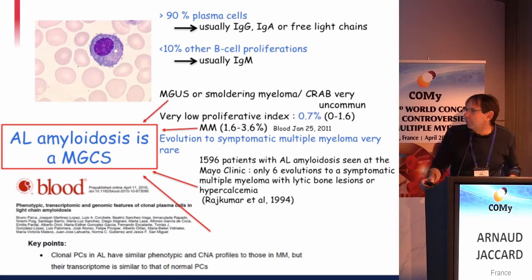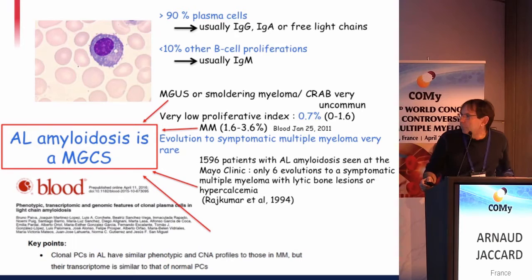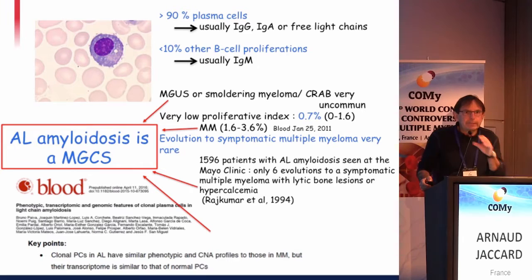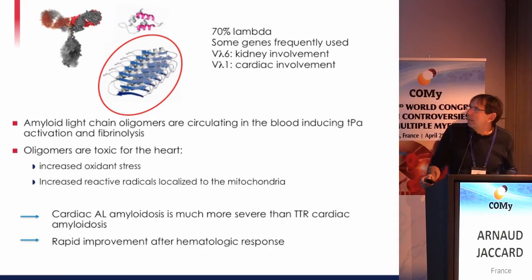Recently it has been shown that clonal plasma cells in AL have similar phenotypic and genotypic profiles as in myeloma, and their transcriptome is very similar to that of normal plasma cells. So we can say that AL amyloid disease is MGCS, as presented this morning by Jean-Paul Fermand.